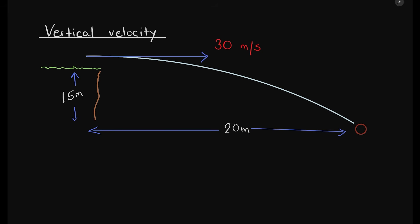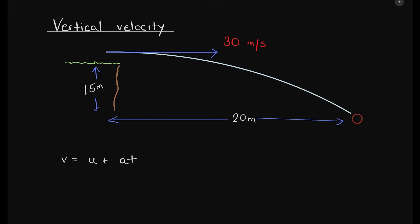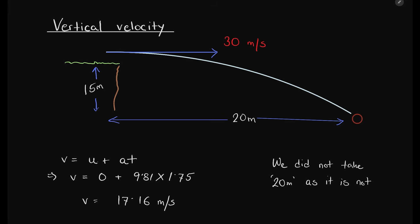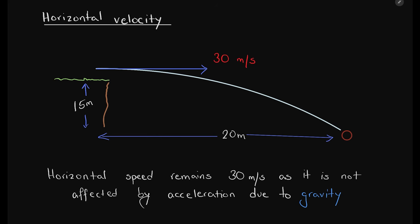The question might ask for the final vertical velocity when the ball hits the ground. Using v = u + at with vertical values, and positive 9.81 as the ball is moving downwards, the answer comes out to be 17.16 meters per second. Note that we did not use 20 meters in this calculation as that was horizontal, not a vertical component. If the question asks for the horizontal velocity when the ball hits the ground, the answer is simply 30 meters per second, as horizontal speed is not affected by gravity and remains constant along the entire path.